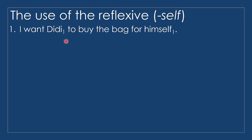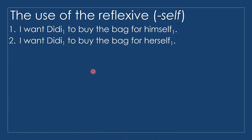If Duty is a female, then it's hard for us to understand the sentence, because the understanding of 'himself' here depends on the noun phrase over here. Then in the sentence 'I want Duty to bind the bag for herself,' our understanding of 'herself' depends on Duty. Here we have 'herself' and therefore we understand that Duty is female. So with the reflexive, the reference of the reflexive is the noun phrase over here, and there must be a match in gender. If we have 'herself,' the person should be female; if we have 'himself,' the person must be male.